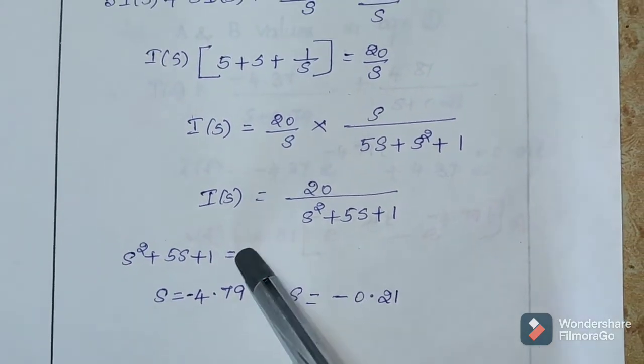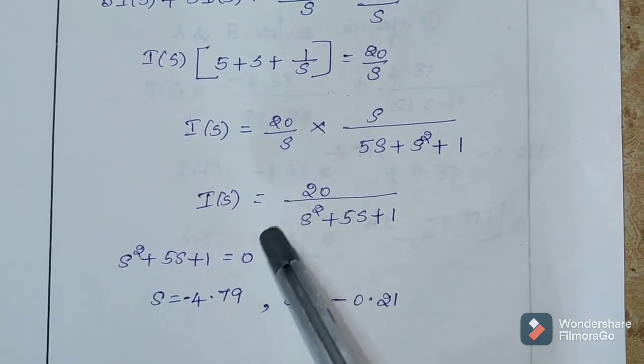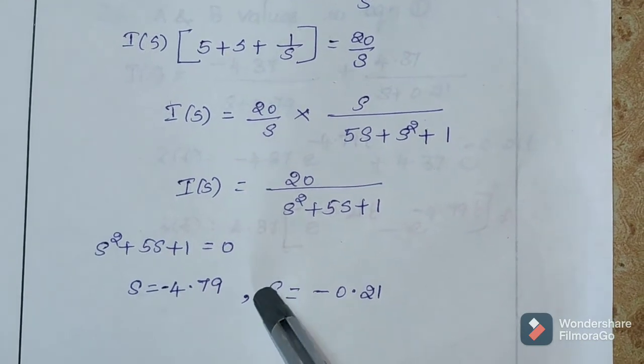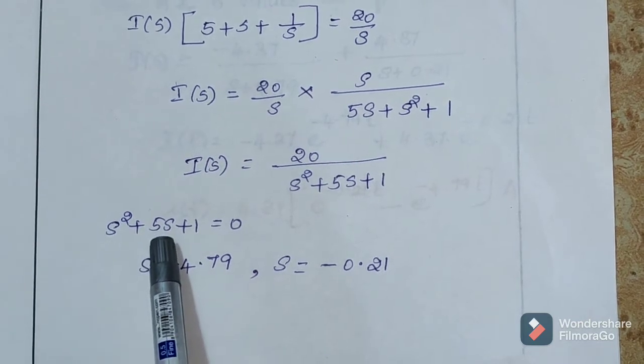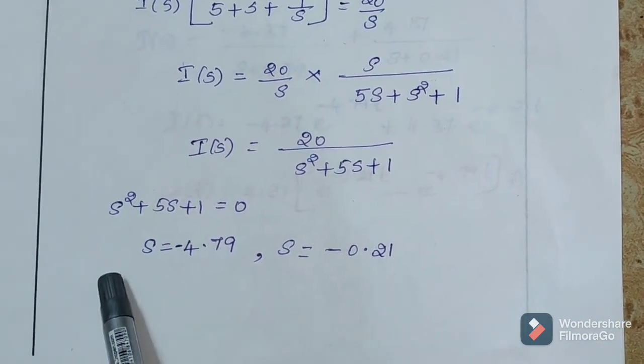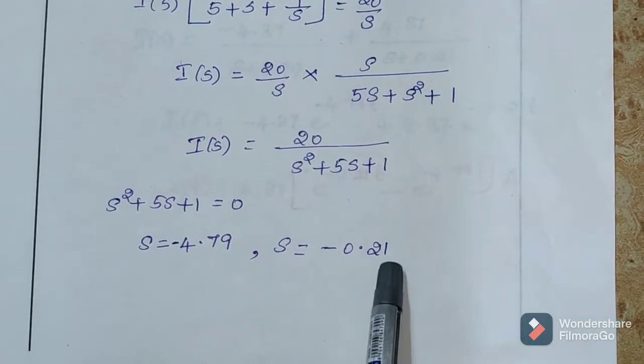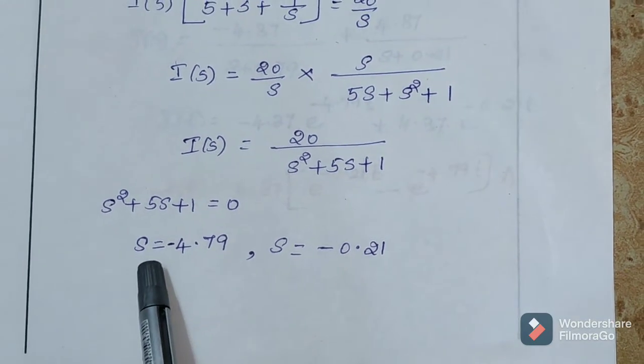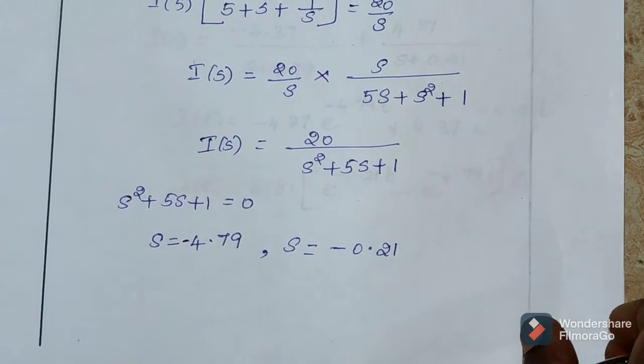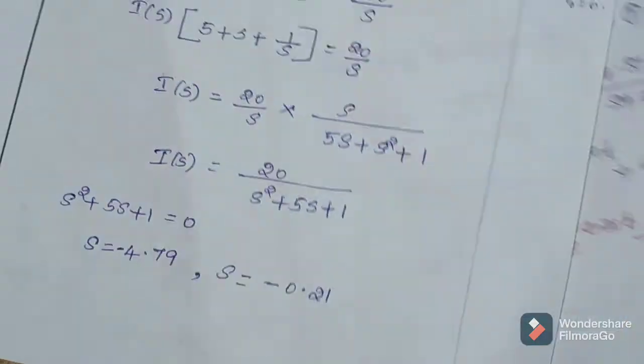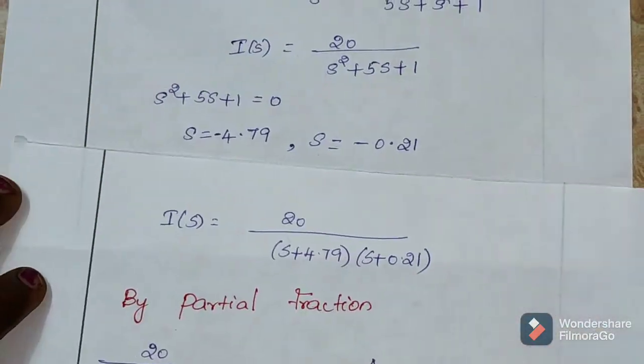Using calculator, you can solve this. Substitute A value is 1, B value is 5 and C value is 1. Substitute these values, what do we get? We'll get s value. So, s value is minus 4.79 and the another one value is s is equal to minus 0.21.